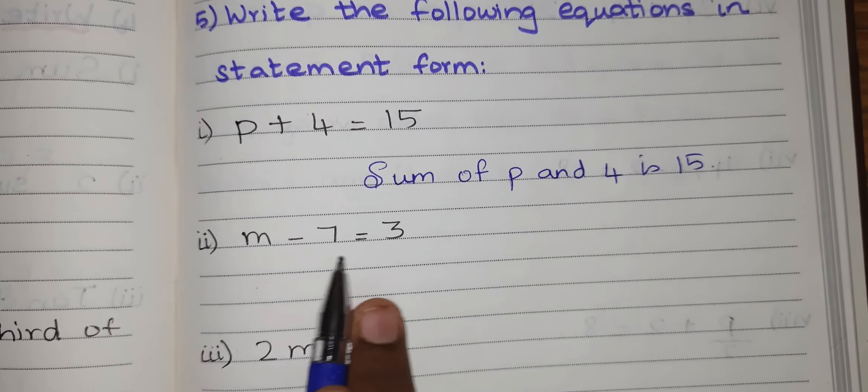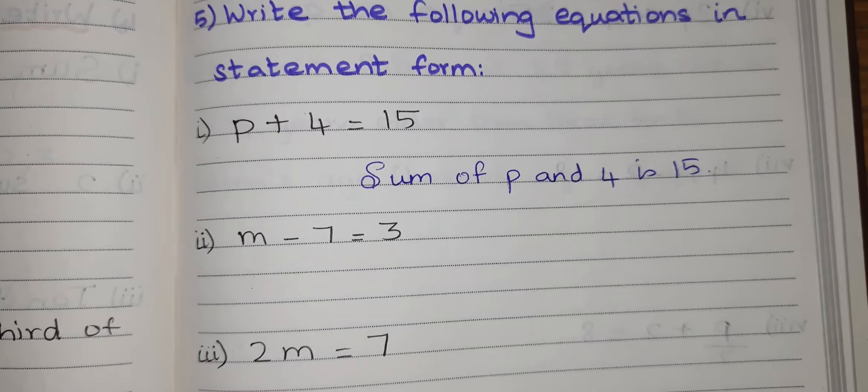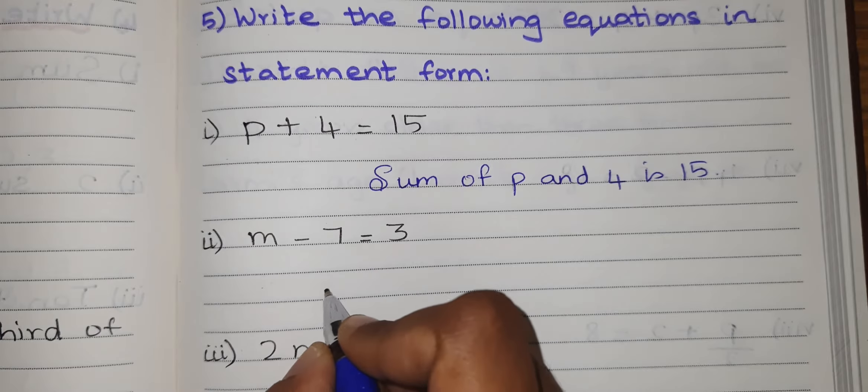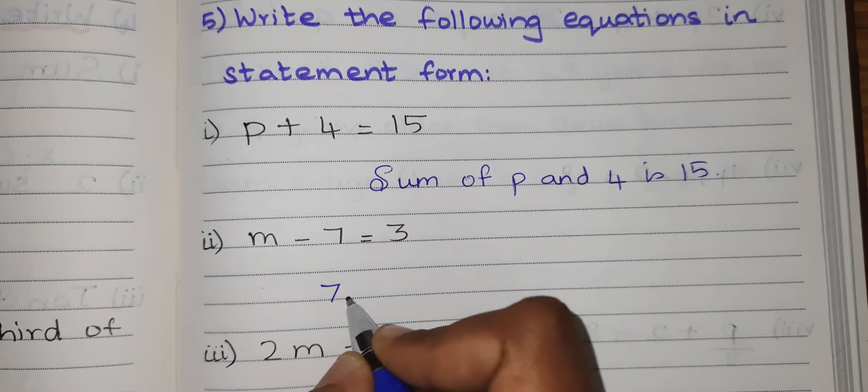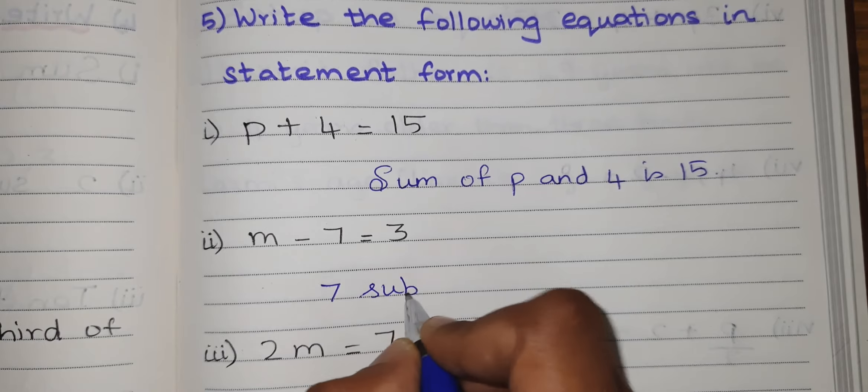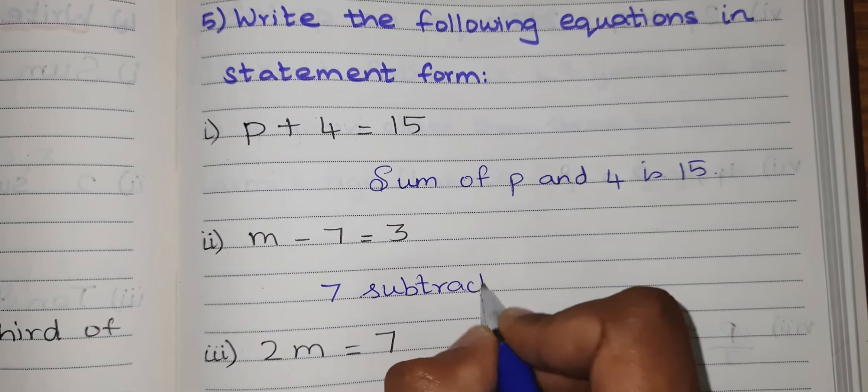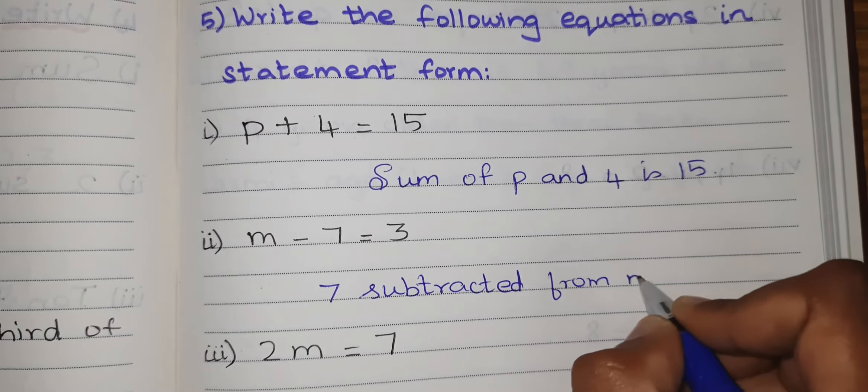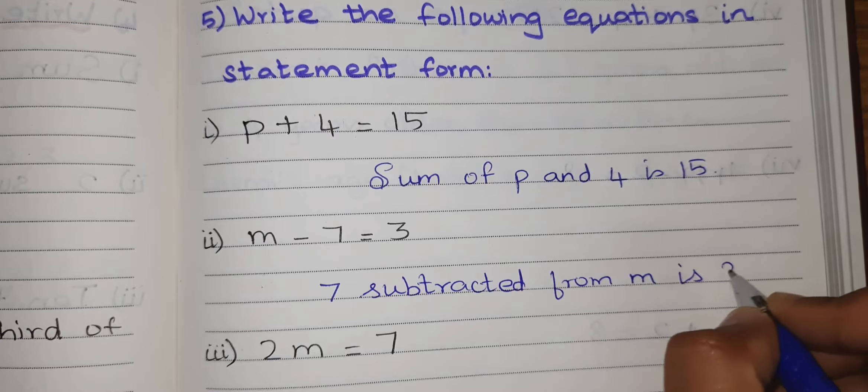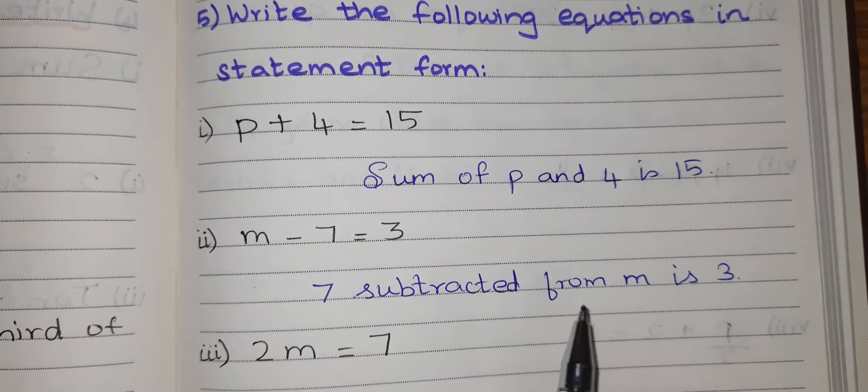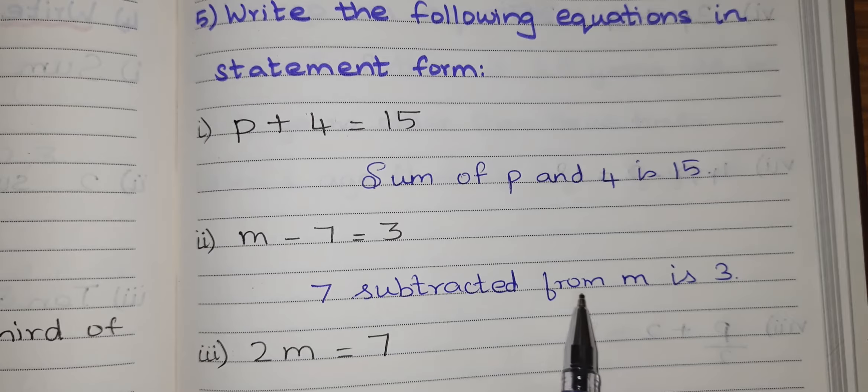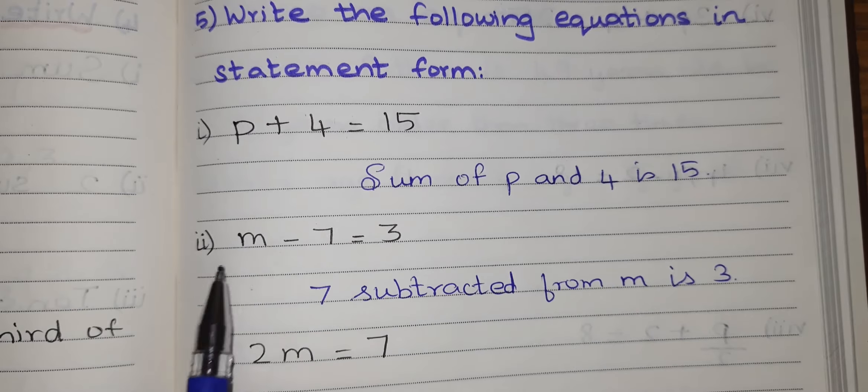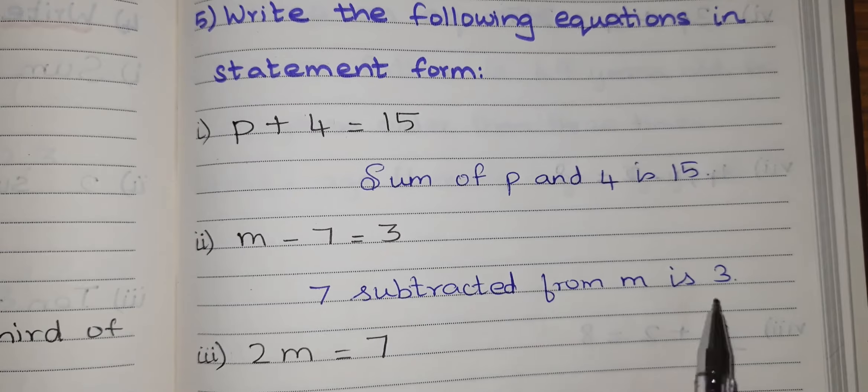m minus 7 equal to 3. It means I have to first write the 7. 7 subtracted from m is 3. The term that is after from comes first. So m minus 7 equal to 3.